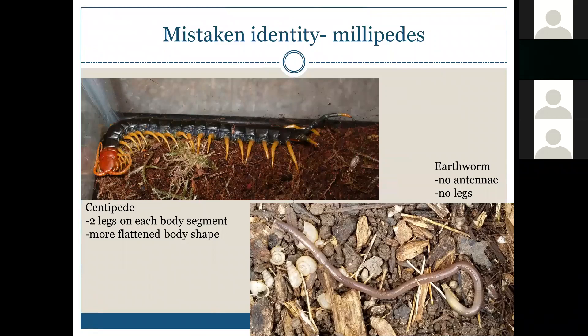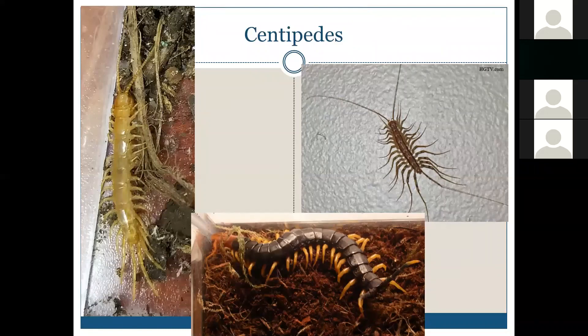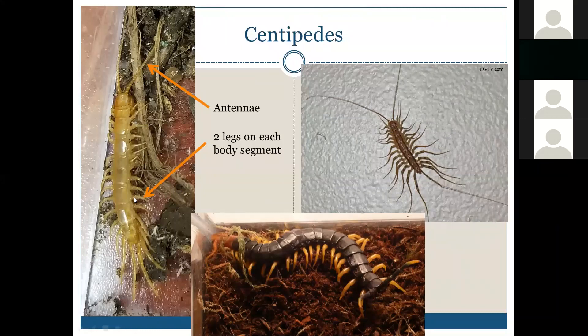Centipedes are very similar to millipedes — they are both myriapods, so they're going to have a pair of antennae as well, a head, and that long worm-like body. But if you look closely, they only have two legs on every segment of their body. There are a variety of centipedes. The three pictures shown are all centipedes, and they are all very different.